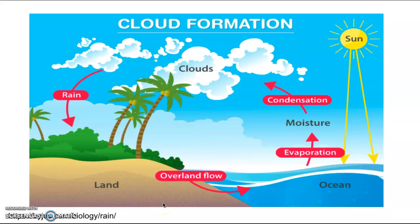The first picture shows the cloud formation. The cloud is very important for precipitation. Precipitation forms in a cloud when water vapor in the atmosphere cools and condenses into bigger and bigger droplets of water. When the drops are heavy enough, they fall to the earth as snow, rain, freezing rain, sleet, etc.